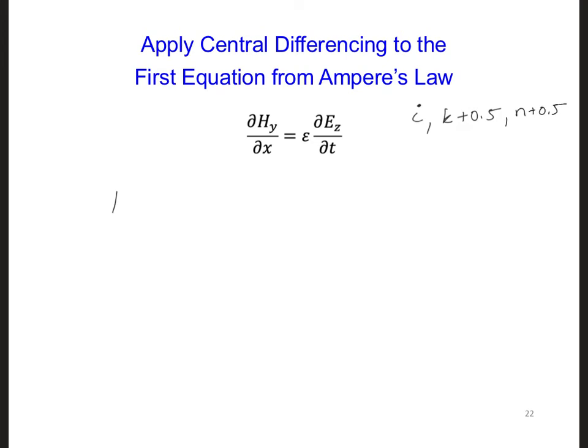So for the left side, we'll get H_y at n plus 0.5, and then according to our diagram, the H_y's are at i plus 0.5 and k plus 0.5. And then we have, this is a spatial derivative in the x direction, so n is going to be the same, and I'm going to put i minus 0.5 here, and then we'll have the same k index, k plus 0.5. And that's divided by delta x.